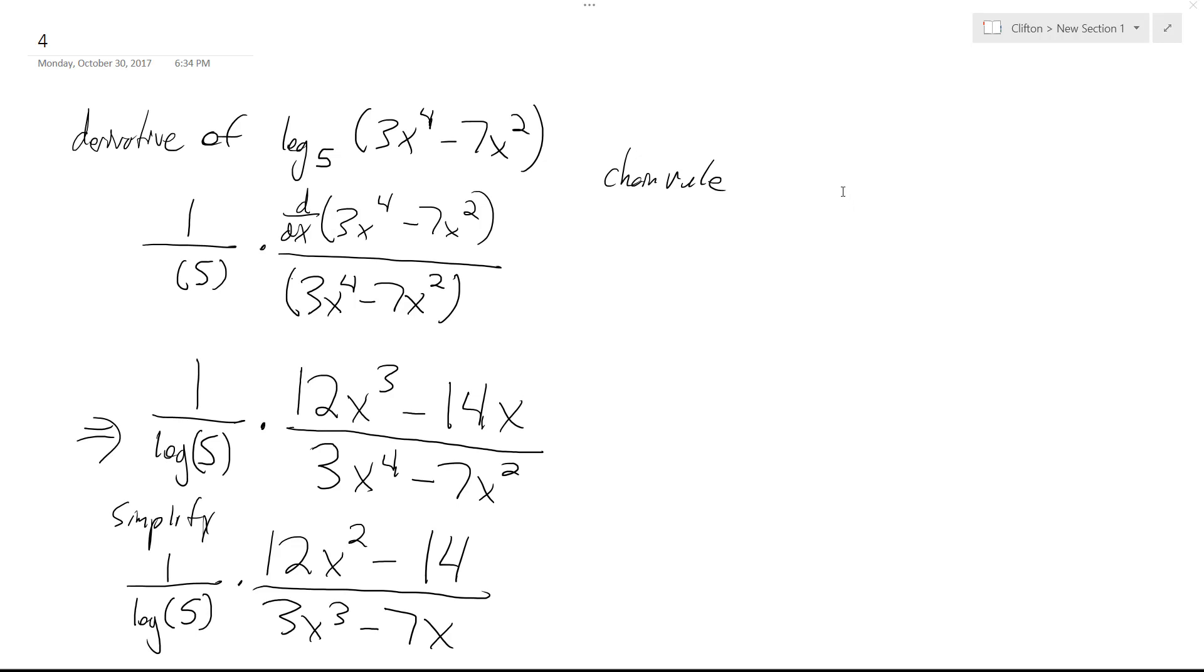How this is going to work is it's kind of a chain rule type thing, and this should be log. So 1 over log of 5, and then what I do is I take that derivative.